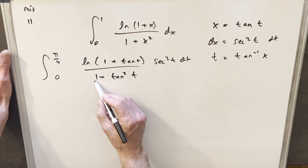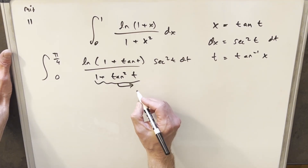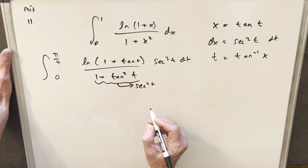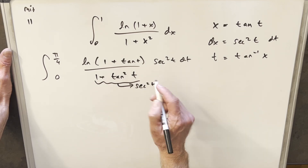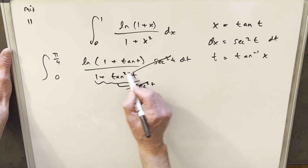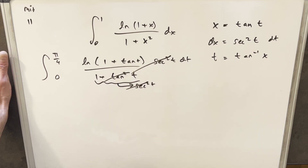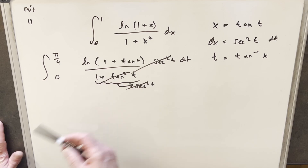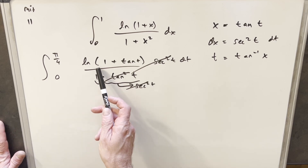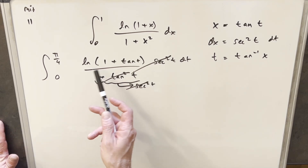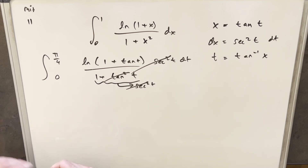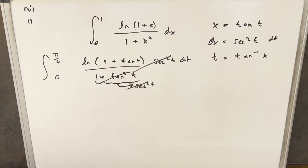You may recognize that we have an identity here: 1 plus tan squared t is the same thing as secant squared t. So we can actually just cancel that with the secant squared from dx. Now we just have the integral of natural log of (1 plus tan t), which is not too different from natural log of tan t or cosine t — other integrals I did recently.